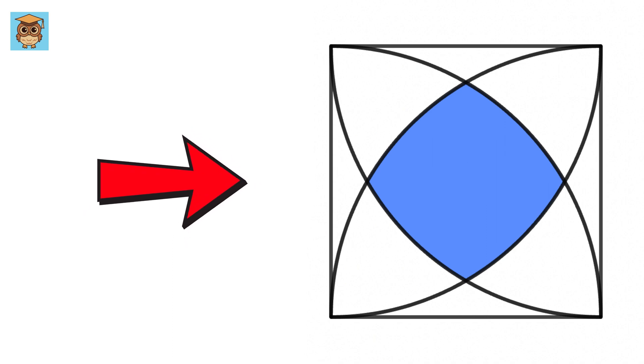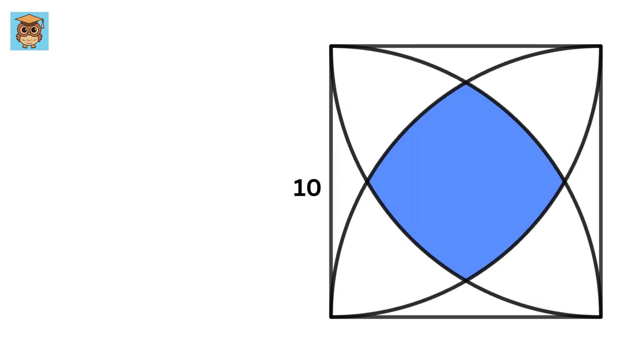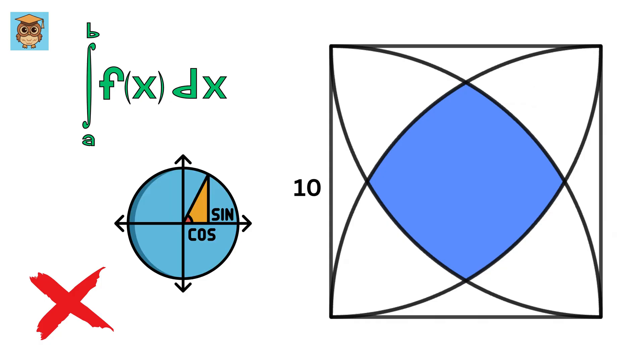We have this nice but tricky geometry problem. This is a square of side length 10, and all of these four curves are quarter circles. Our job is to find the area of this blue region. Also note that you cannot use integration and trigonometry to answer this question. Use only pure geometry.